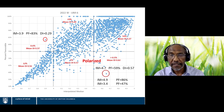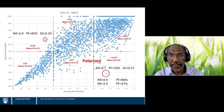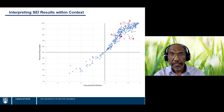Instructors can also look at student comments, which in cases of polarization can shed light on why certain students — such as those from a different faculty in a cross-listed course — did not rate their experience favorably.